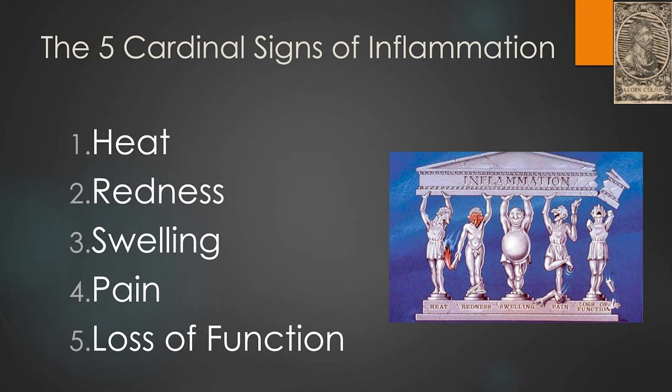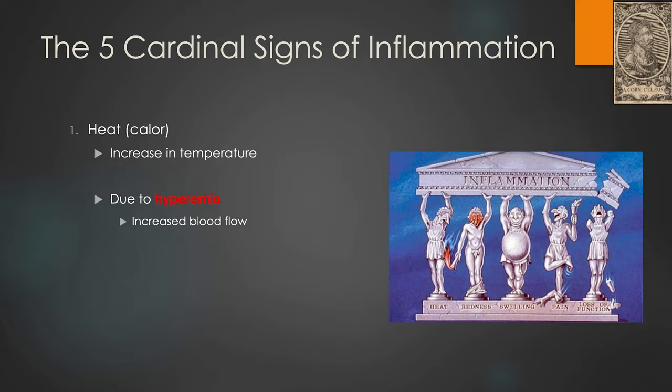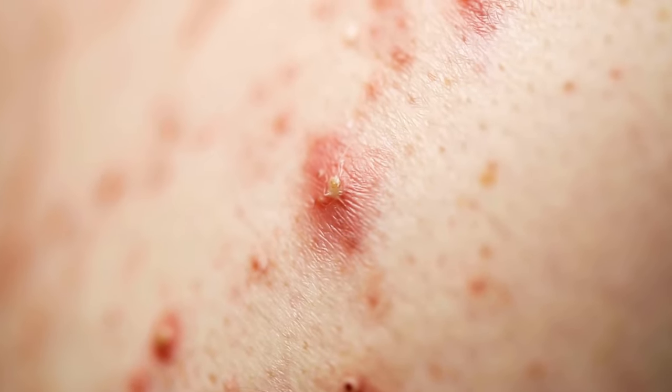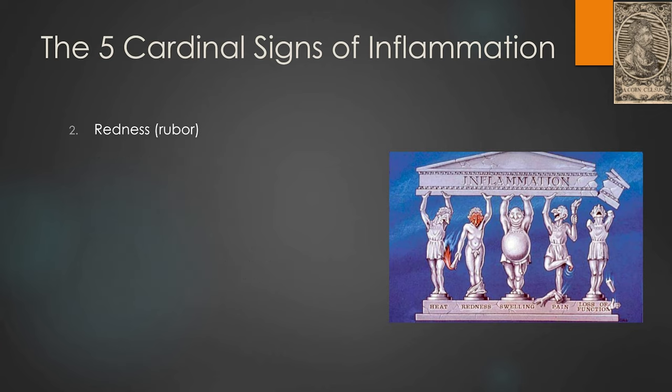The first cardinal sign is heat, or calor, and this is a literal increase in temperature. That makes sense — it's due to increased blood flow to a region. Think about something like a pimple or a small area of inflammation. I've got increased blood flow to that site of injury — that term is hyperemia — and this results in warm blood to the area, so when you touch it, it's going to feel hot.